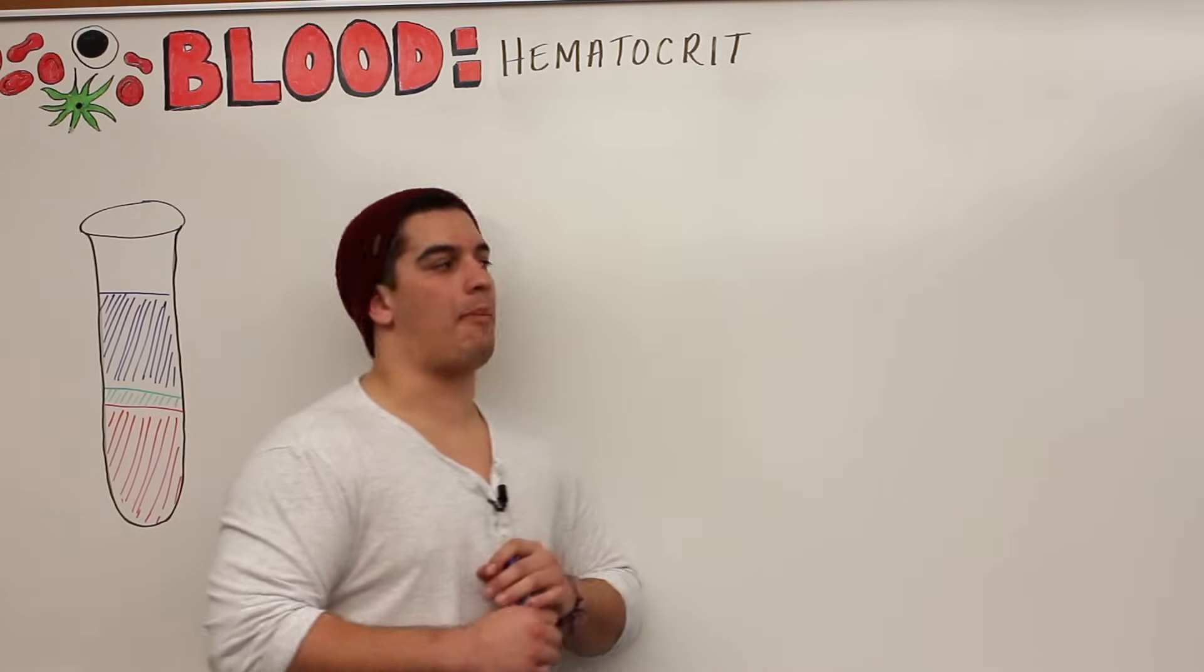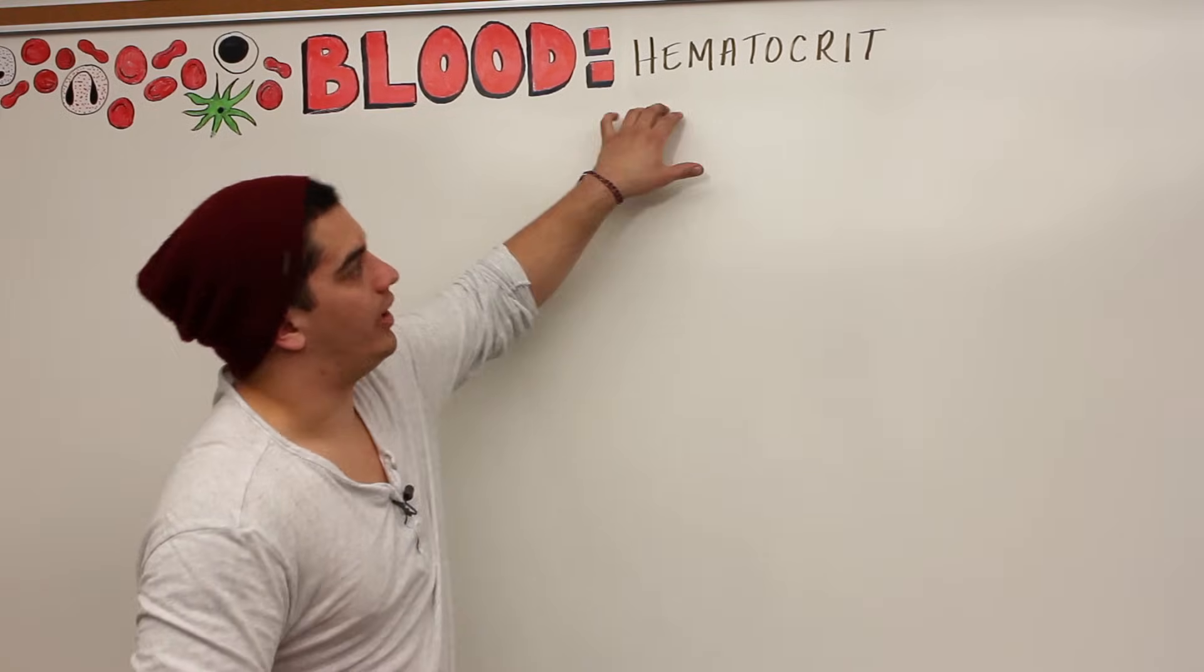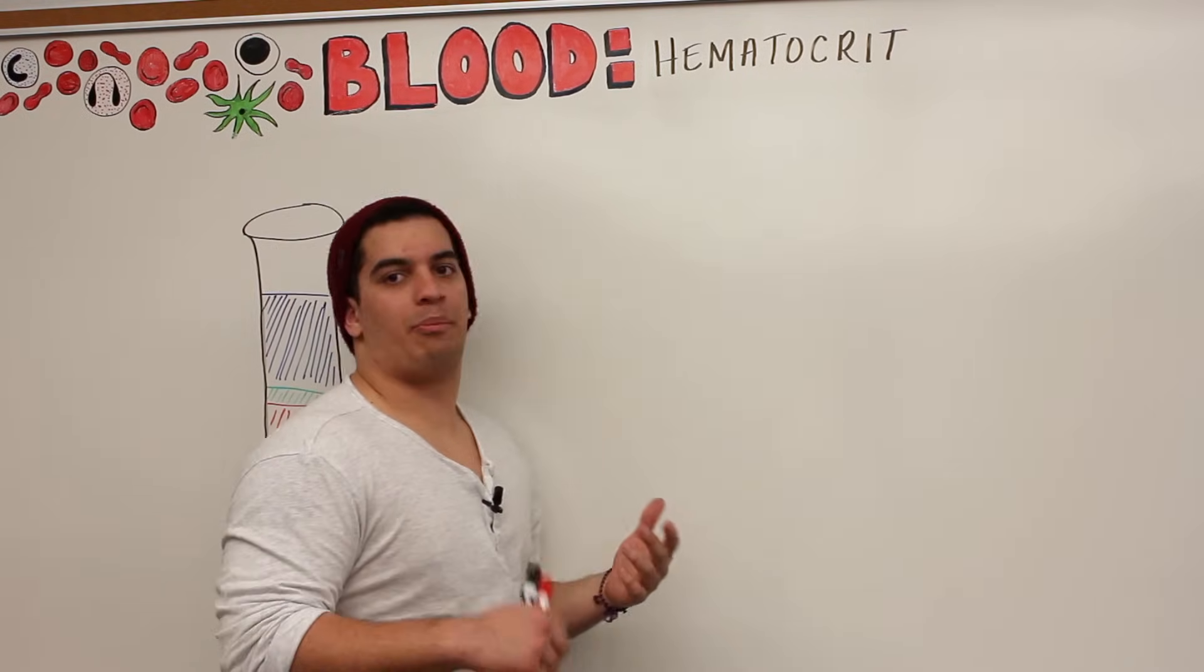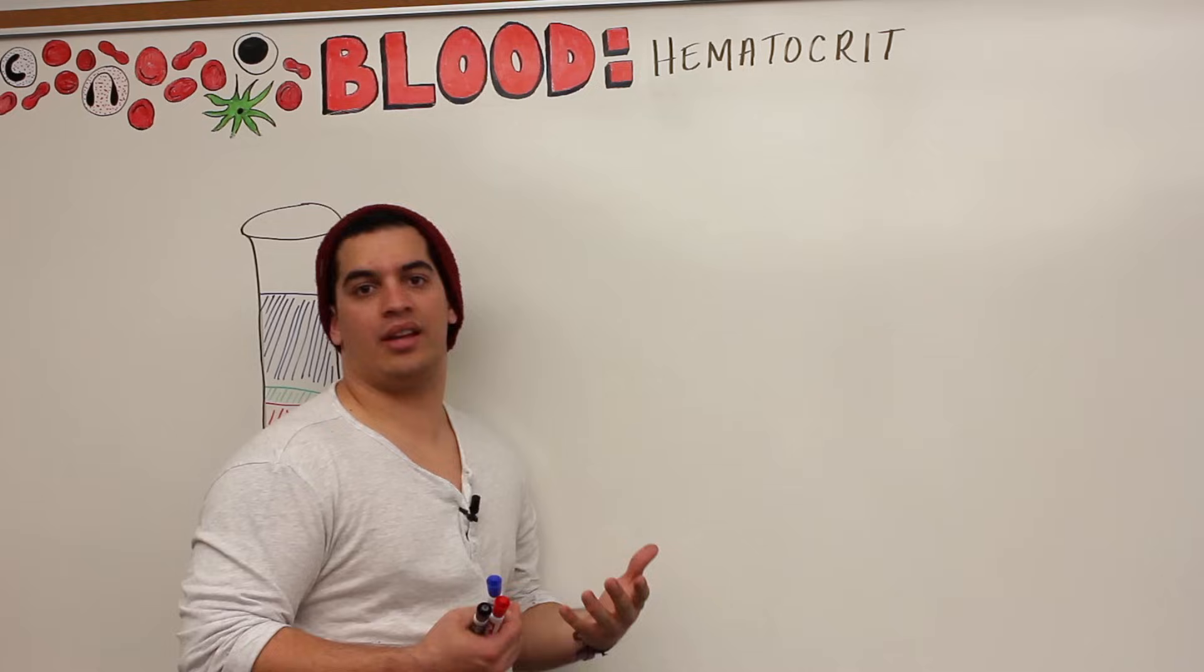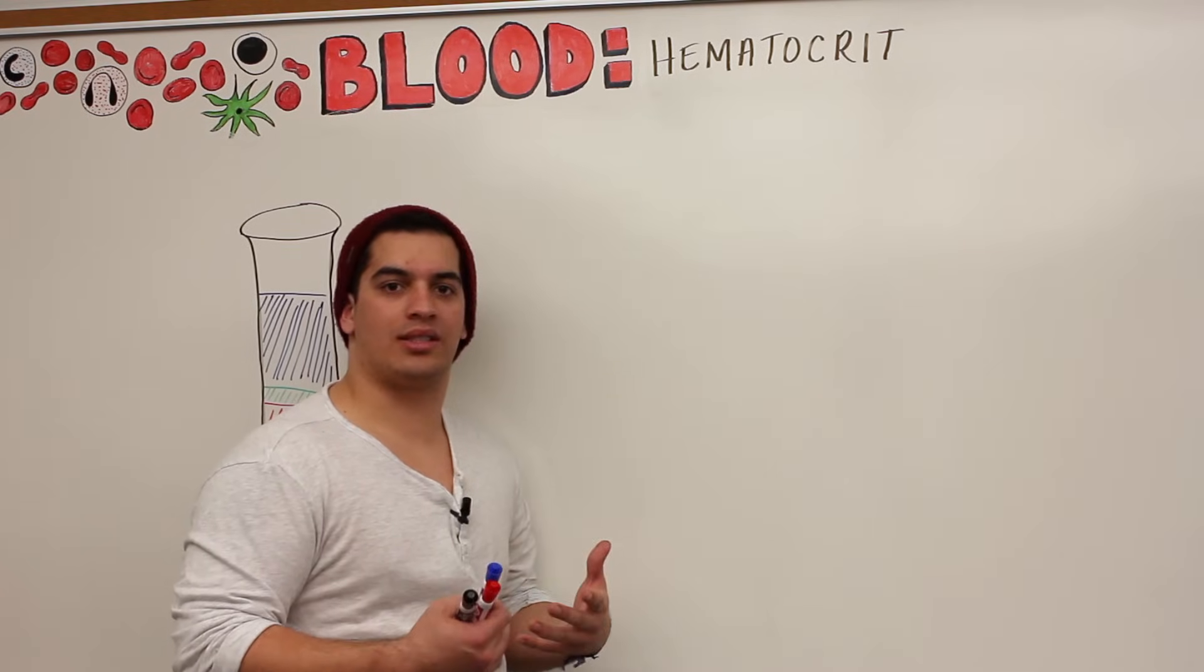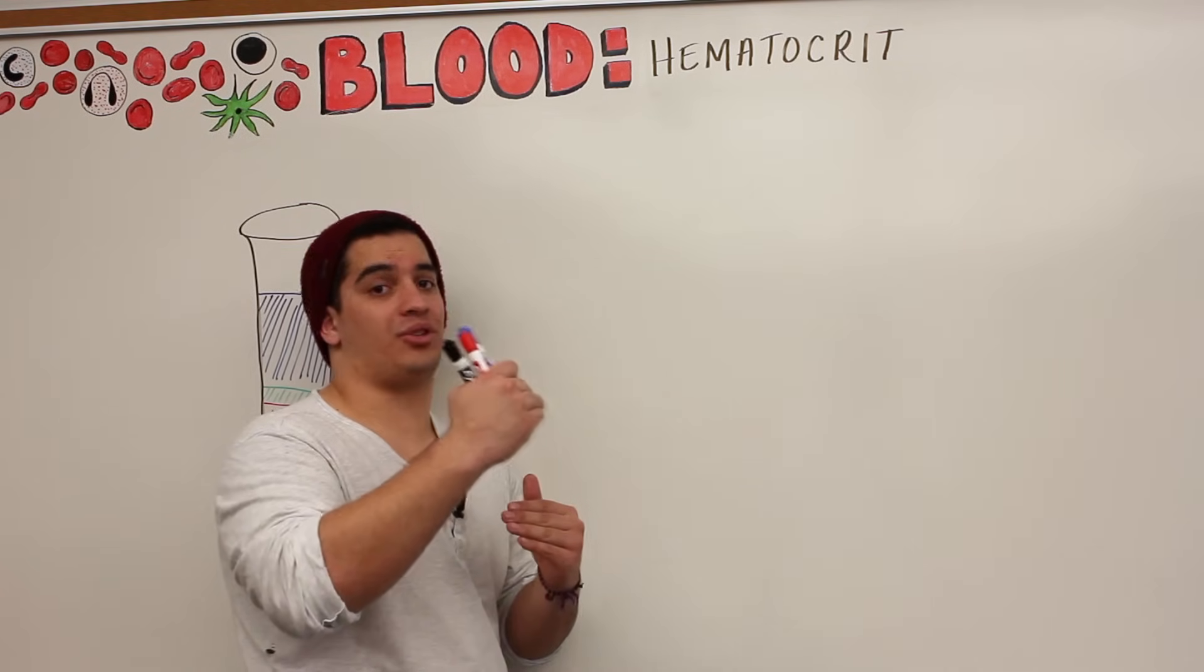Alright Ninja Nerds, in this video we're going to talk about hematocrit. So what is hematocrit? Hematocrit, also called your packed cell volume, is just the percent of your erythrocytes or your red blood cells for that entire amount of blood that you're taking out of the individual.